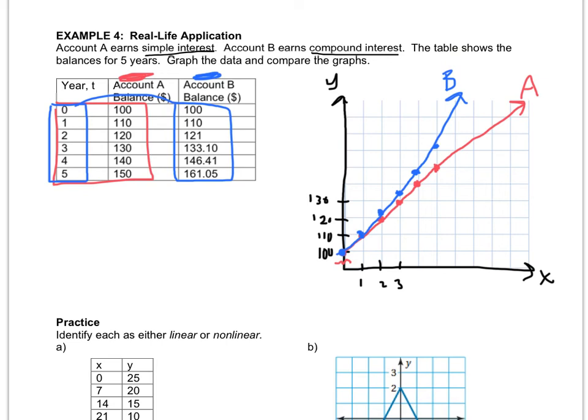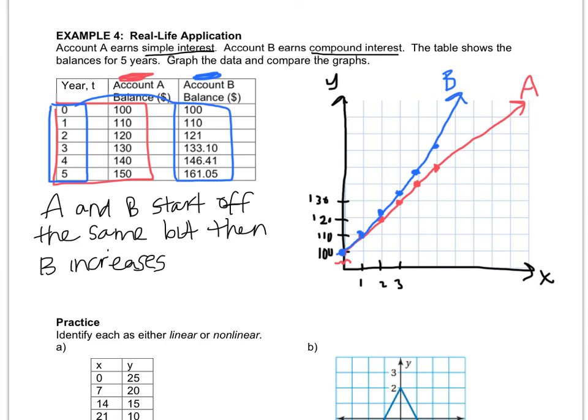So now I have to compare the graphs. So I have to write a sentence about what I see. So here's what I see. A and B start off the same. But then B increases quicker.